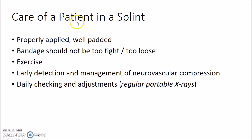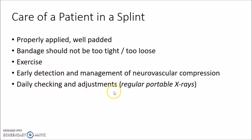The splint should be properly applied and well padded at the bony prominences and at the fracture site. The bandage should not be too tight or too loose — if too tight it may produce sores, and if too loose it will be ineffective. The patient should be encouraged to exercise the muscles and joints inside the splint. Early detection and management of neurovascular compression due to the splint is important. Daily checking and adjustments can be made, and regular portable x-rays can be used for this purpose.